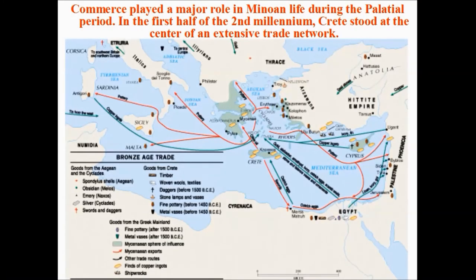When we look at imports and exports, Cretan exports consisted of timber, foodstuffs, cloth, olive oil, and finely crafted luxury goods. In exchange, the Minoans imported copper, gold, and silver. This is a very sophisticated trade network that developed between these regional civilizations. Looking at our own day and age and glancing backward at what the Minoans were a part of, we can see some very real similarities.